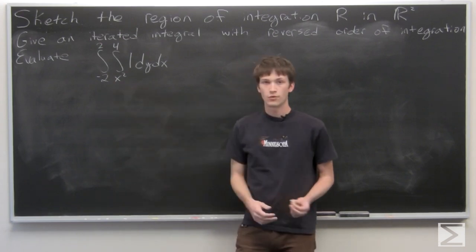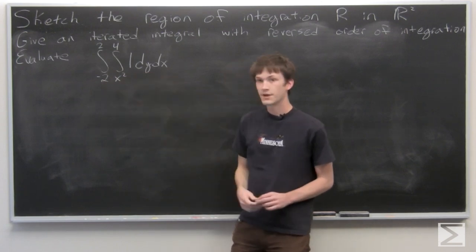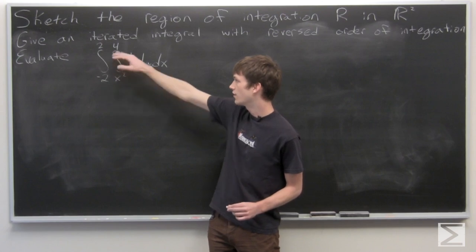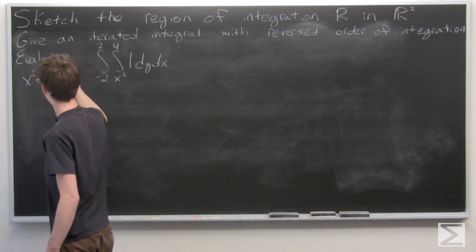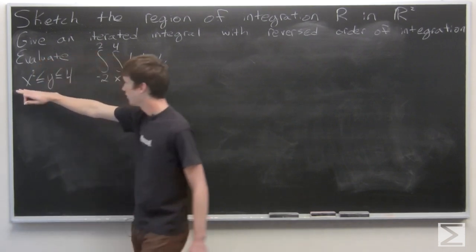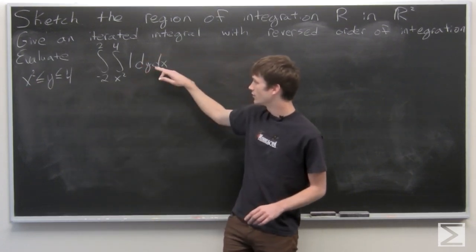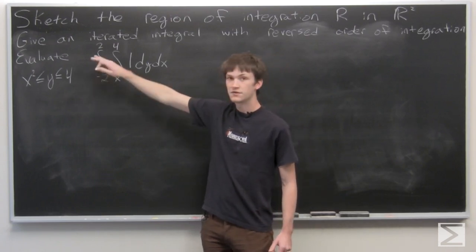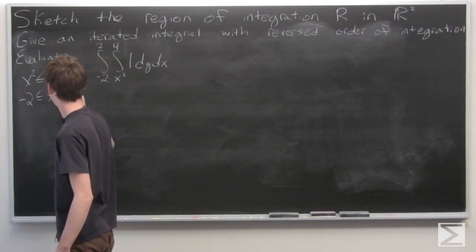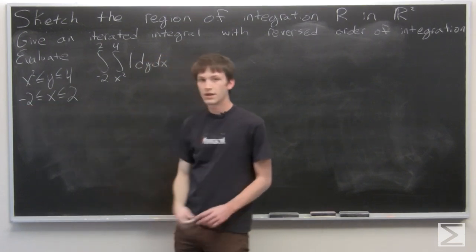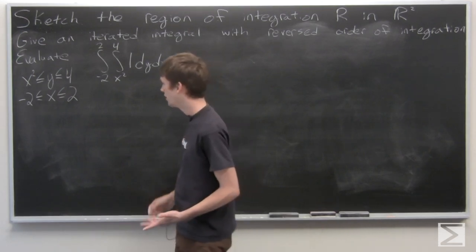First we want to sketch our region of integration. With respect to y, we want y to vary from x squared to 4, so y is greater than x squared but less than 4. And then with respect to x, we want x to vary from negative 2 to 2, so x is greater than negative 2 but less than 2. So we have these two constraints, and let's look at the region that they describe.